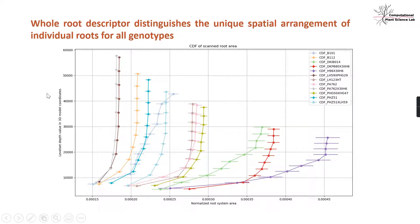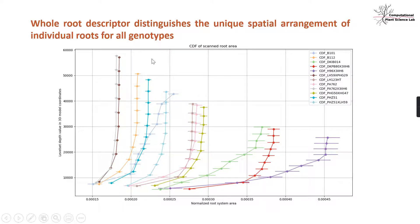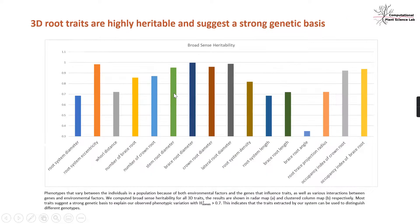This figure shows that with the level-set depth and normalized root system area, this curve can successfully capture all the genotype differences in a statistical way. We can see that all the curves are distinguished from each other, representing different genotypes. This means our 3D root descriptor has the ability to distinguish the unique spatial arrangement of individual roots for all genotypes. Another discovery is that the 3D traits are highly heritable and suggest a strong genetic basis.